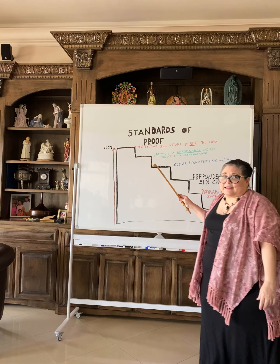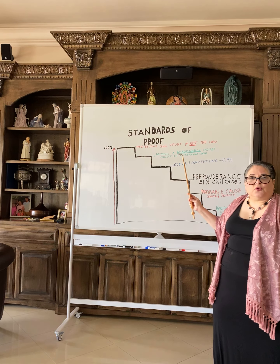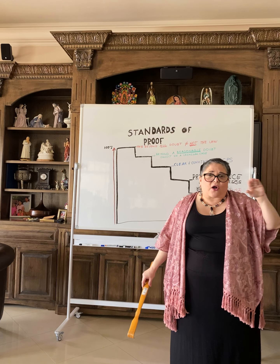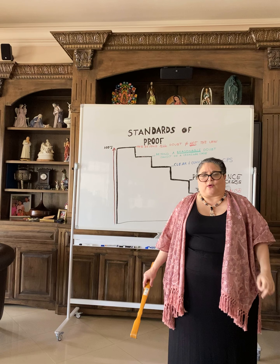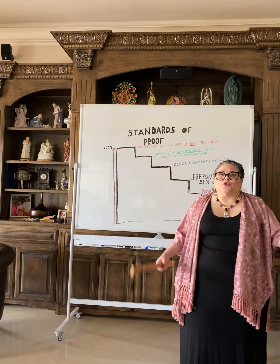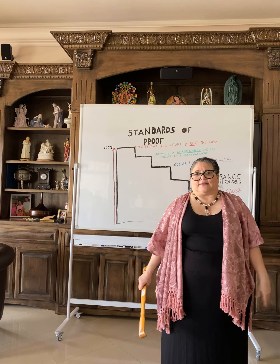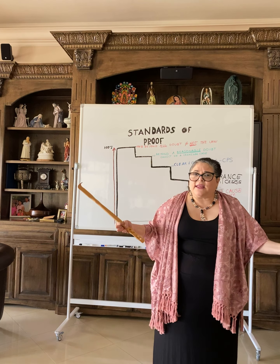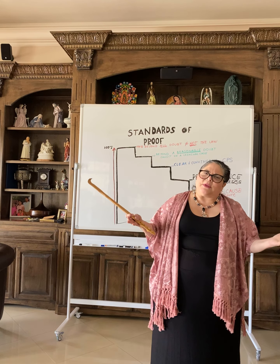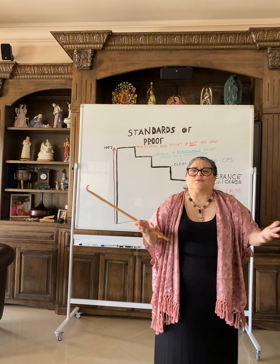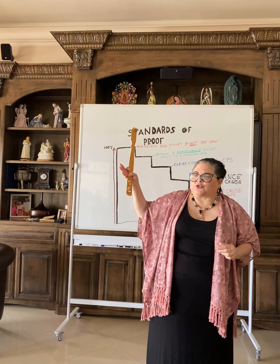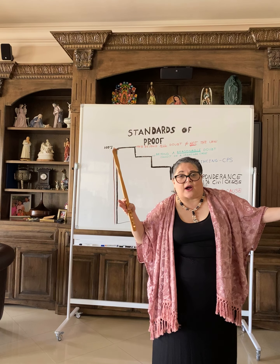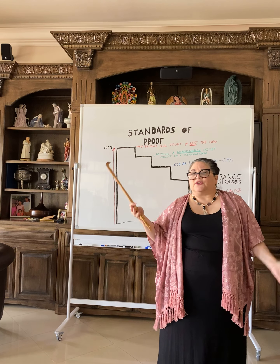Today I'm going to teach you standards of proof in different stages of a criminal case. When I talk about standards of proof, I'm talking about the amount of evidence that is needed for a certain situation or for certain facts to be proven to a court, depending on the type of case and the stage of the case. Let's start with the highest burden in our criminal justice system, which is the burden to convict a defendant of a crime. It is the highest burden because it is imperative that there is a lot of evidence to show that a person committed a crime.